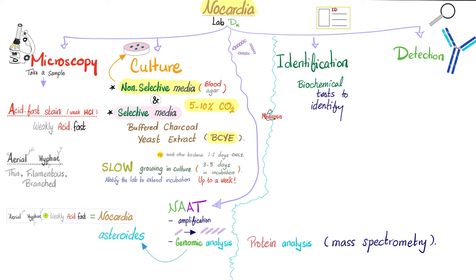How can we diagnose Nocardia? Use microscopy with the acid-fast stain — you'll have a weakly acid-fast organism. Don't forget the hyphae are up in the air — thin, filamentous, branched, and rising above the surface of the colony. When you see aerial hyphae plus weakly acid-fast, this is Nocardia — take it to the bank. To determine the species, you need genomic analysis. For culture, use non-selective media or selective media like BCYE — buffered charcoal yeast extract — the same medium used to isolate Legionella. For a respiratory infection, the same medium will pick up both Legionella and Nocardia. Don't forget Nocardia is notoriously slow and can take up to a week. Protein analysis via mass spectrometry may be the future of diagnosis.